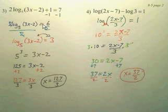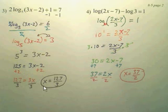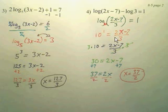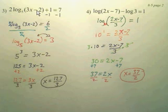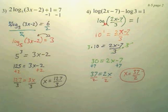Now if you want to solve logs, you solve them with exponents. Get the log all by itself, move everything over, then drop the log and switch these two. 5 to the 3rd is 125, and you solve it. Over here, you know this is base 10. Minus means condense, so you can make that a divide. Then you get 10 to the 1st, drop the log — 10 to the 1st equals this — multiply both sides by 3 and solve. One thing to watch out for with logs is extraneous solutions: plug answers back in to make sure they don't cause an error, because logs can't have negatives inside.